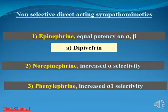الفنايل-أفرن وده برضو رغم إن increased الـ alpha selectivity إلا إنه برضو له certain أو partial beta agonist activity.